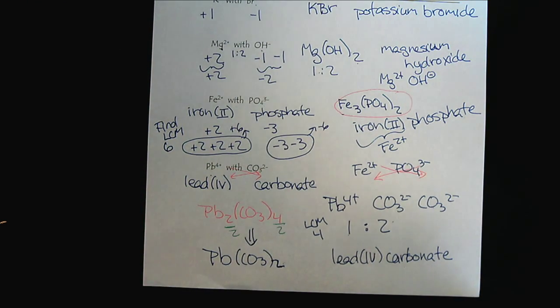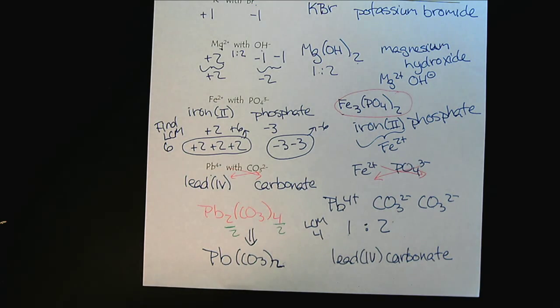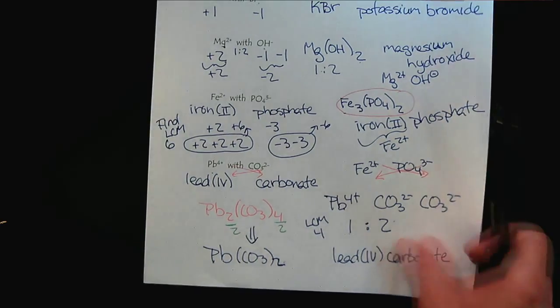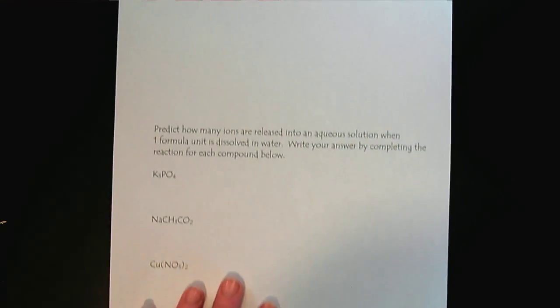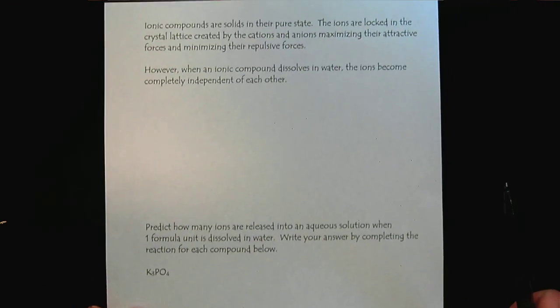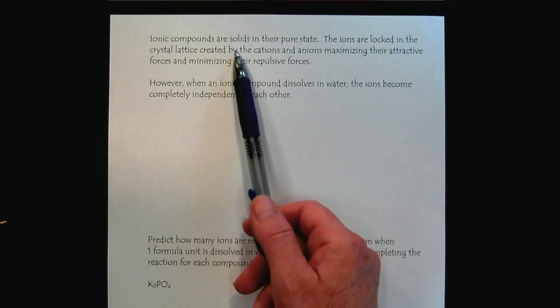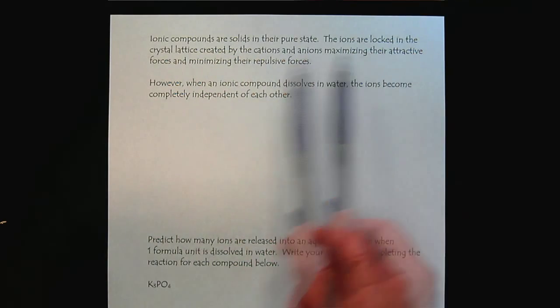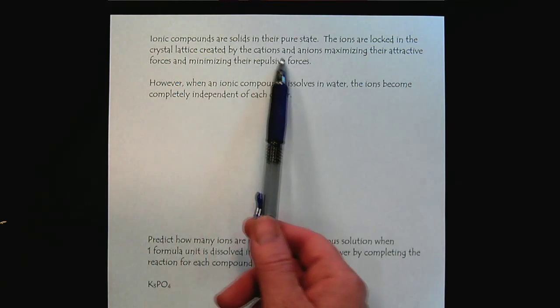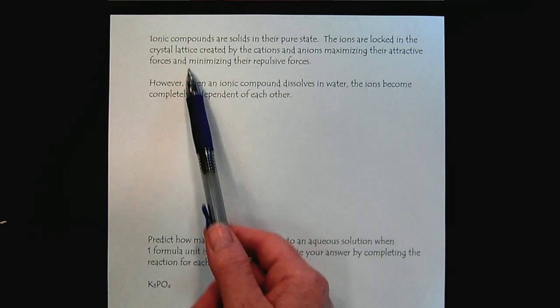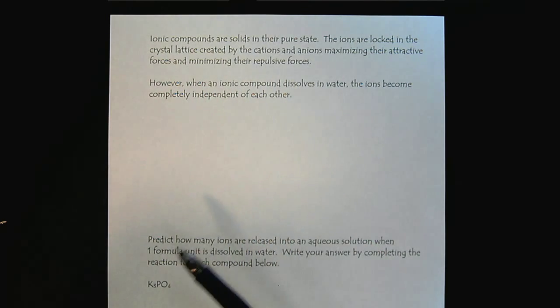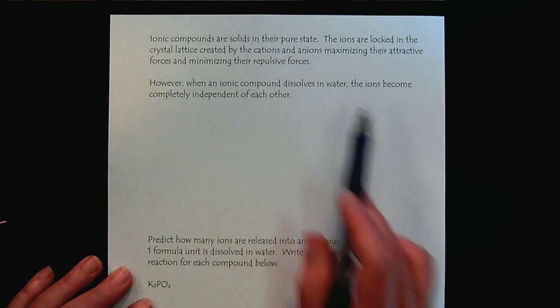And now, we'll do one last bit of wrap-up to show how we can use our understanding of the chemical formulas and nomenclature of ionic compounds, and then we can apply it to solution chemistry. Ionic compounds are solids in their pure state. The ions are locked together in the crystal lattice created by the cations and anions, maximizing their attractive forces and minimizing their repulsive forces. So, then let's keep in mind what happens to ionic compounds when they dissolve in water.